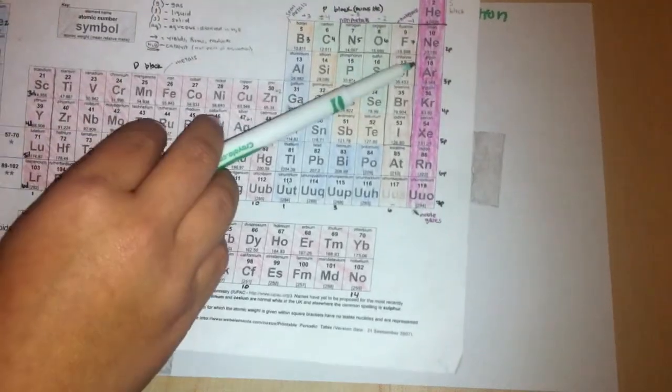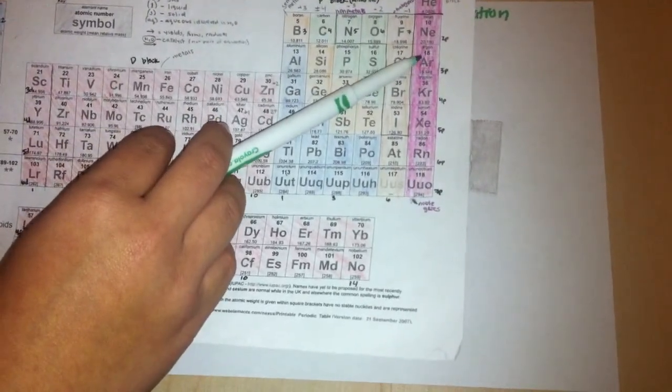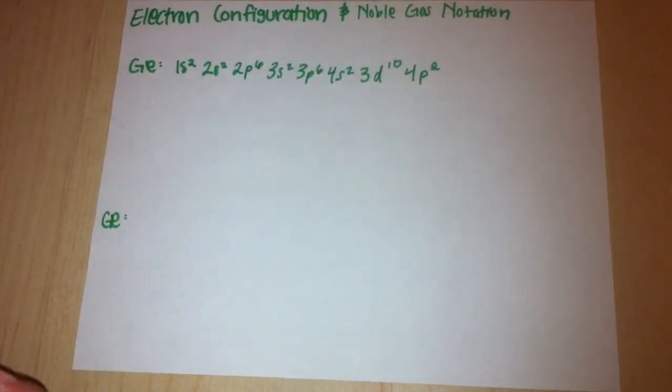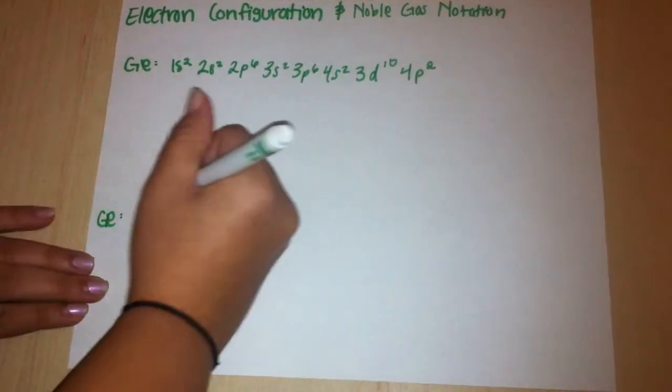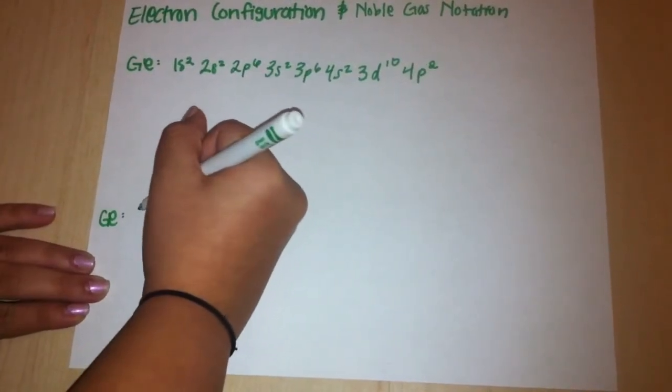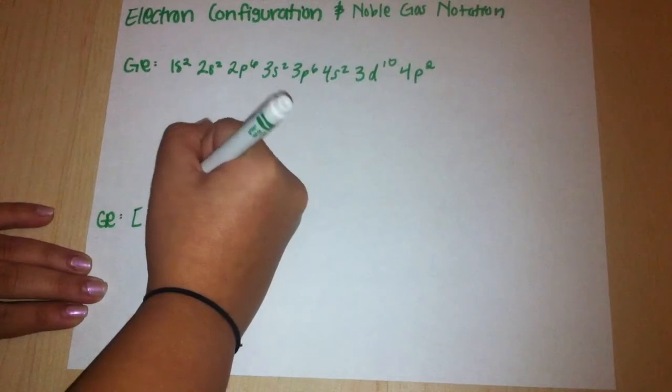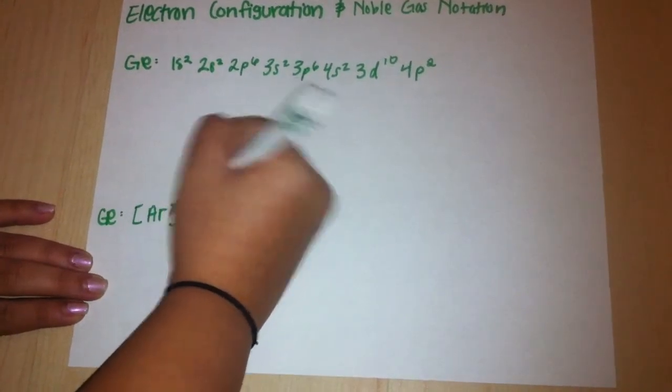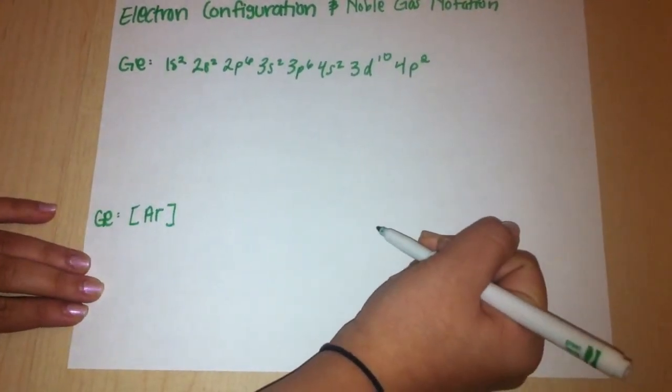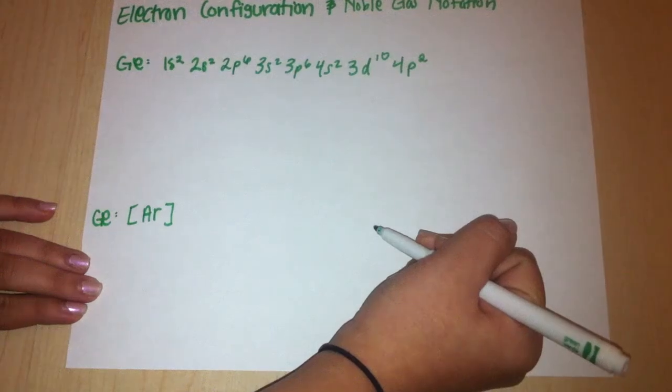If we were to look to the left, the closest gas is argon. It is the closest to germanium and doesn't pass it either. So you would write a bracket, the chemical symbol for argon, AR, and then another bracket. Then you would continue writing the electron configuration until you reach germanium.